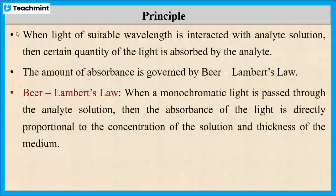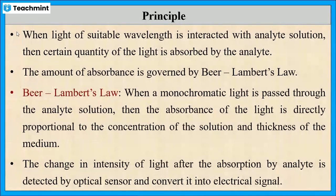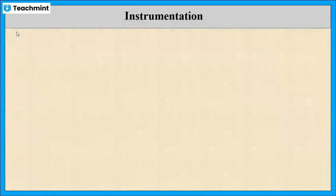After absorption, whatever intensity of emitted radiation is detected by the optical sensor is converted into an electrical signal. Now let us see the instrumentation of colorimetry.